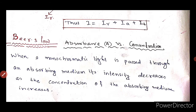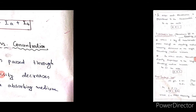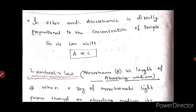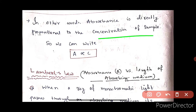Absorbance is directly proportional to the concentration of the sample. We can write A proportional to C. Because if the concentration increases, then the absorbance increases. And if the absorbance increases, then the intensity of light decreases.